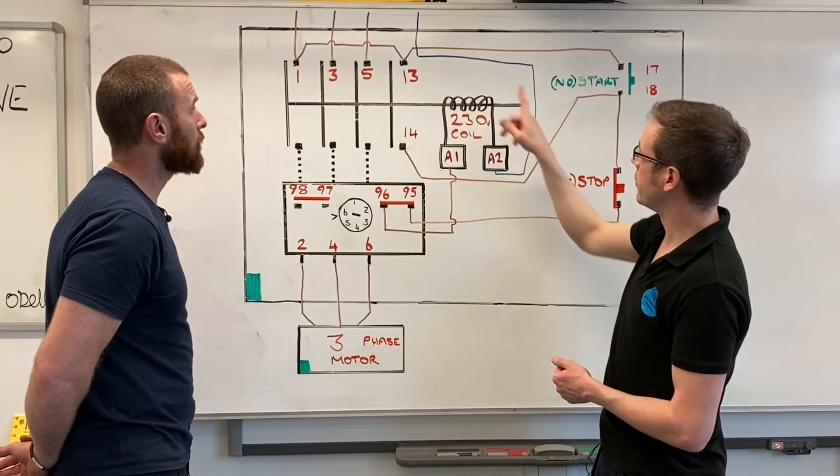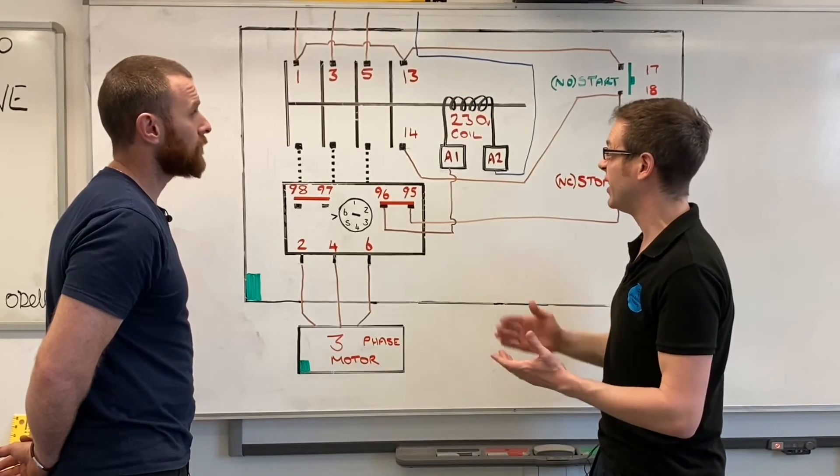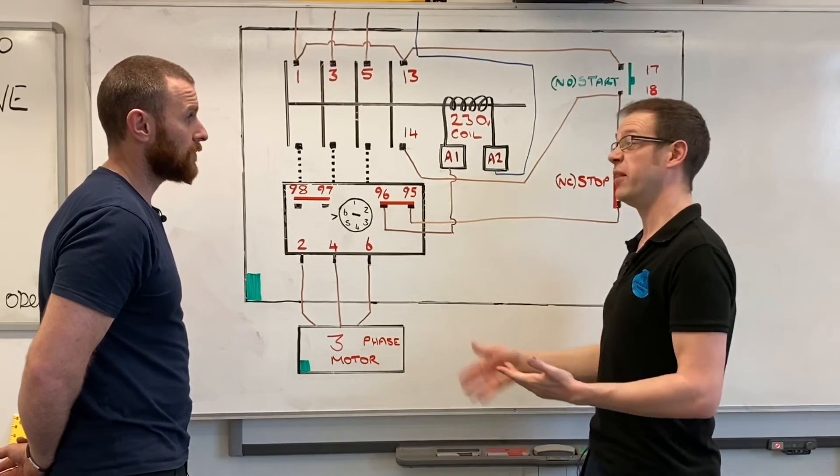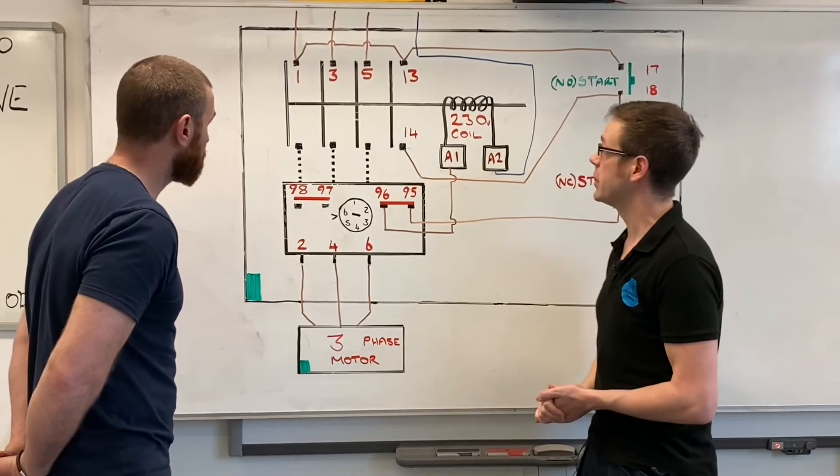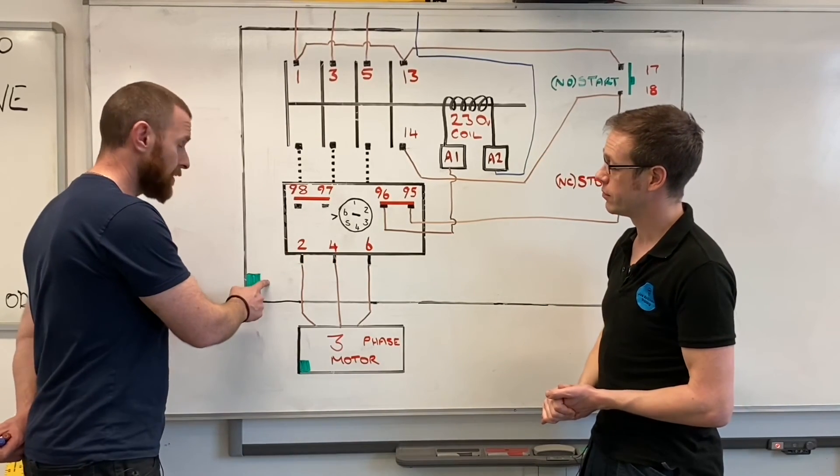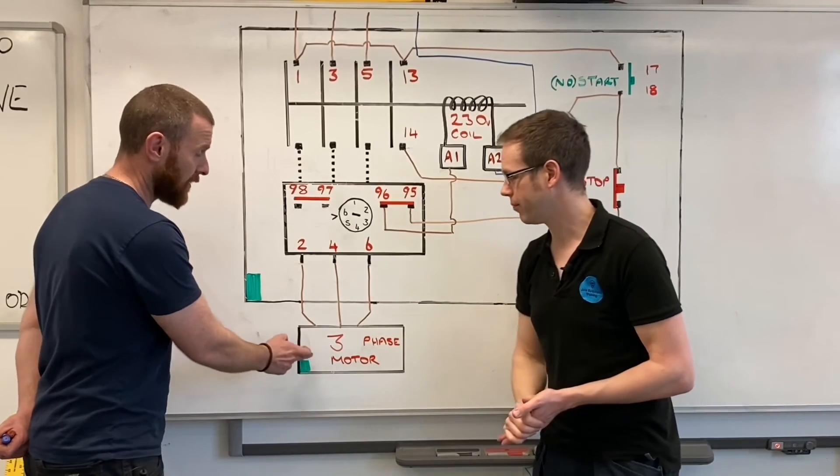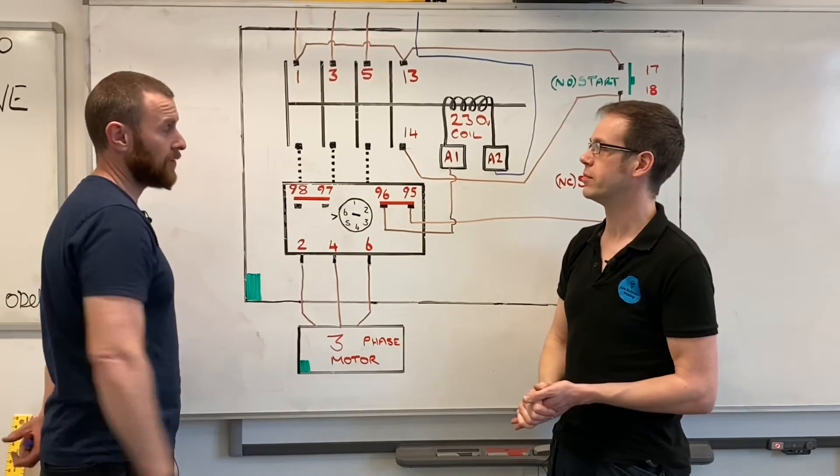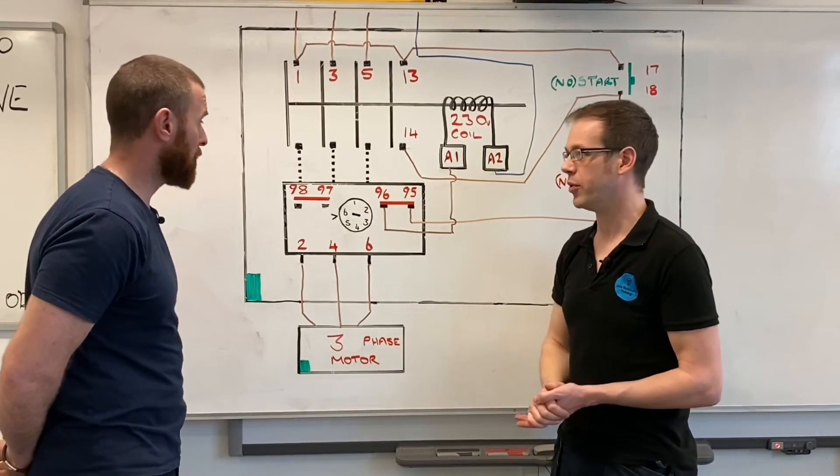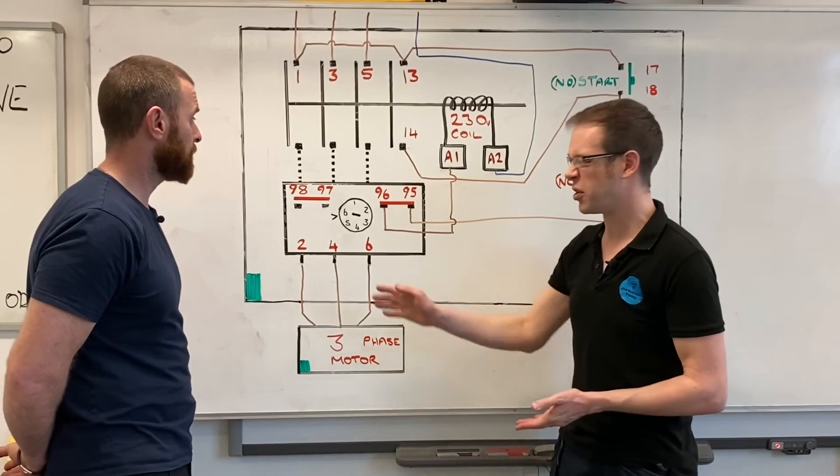We can see that the neutral just goes onto A2, so actually it's almost as simple if not a little bit simpler than the single phase connection. We didn't talk about it last time, but there's the earth connection on exposed metal work and we connect that up as we would. We're just not showing it on here for the sake of clarity and simplicity.